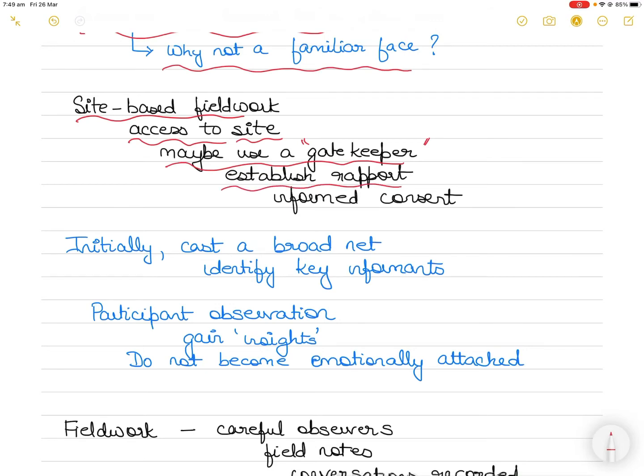After gaining entry into the site, the researcher must establish a rapport with and gain the trust of the people being studied. At the same time they must be open about why they are there. In fact, you should not hide your objectives. In fact, you should obtain the informed consent of the research participants as a requirement of the ethics approval.